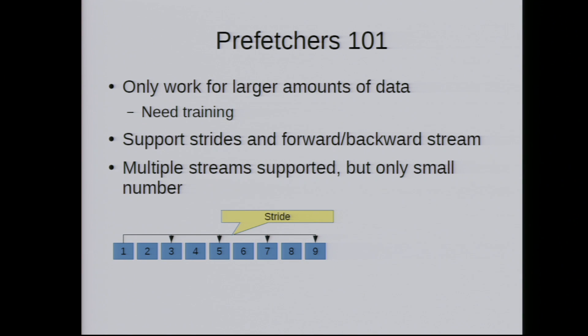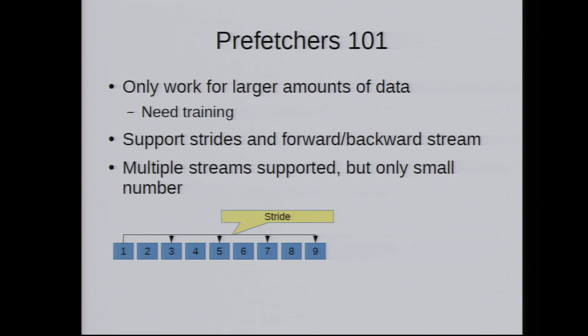A little more on prefetchers: they only work for large amounts of data and need some training period — at the beginning it's slower, but over time as you follow the pattern it becomes faster. They support strides, so accessing every Nth cache line instead of every cache line is fine. They can do forwards and backwards, and somewhat complex patterns — but not too complex. There are also multiple streams supported, but not a huge number. If you have too many concurrent access contexts, you can kill the prefetcher and things get slower.